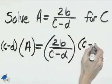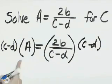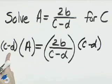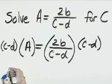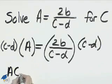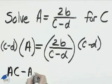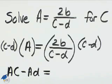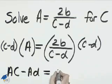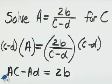C minus D on both sides. On the left is the quantity C minus D times A. That will be AC minus AD. On the right-hand side, C minus D divides away, and all we have is 2B.